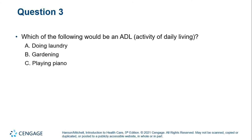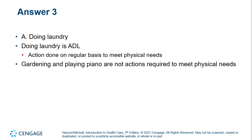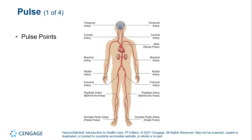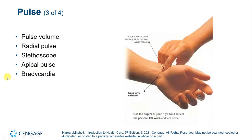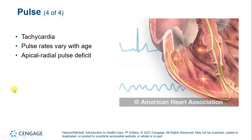Which of the following would be an ADL? It is laundry — just the basics. We will talk about taking pulses. There are many different pulse points. When you measure a pulse you're noting both the rate and the rhythm. The rhythm can be regular or irregular, and you may also notice the pulse volume. Tachycardia is a very rapid pulse, and pulse rates do vary with age.